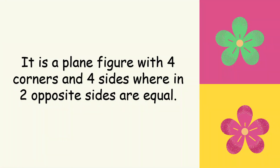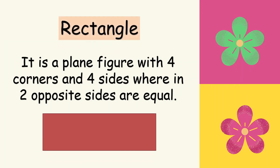Next, this is a plain figure with four corners and four sides, wherein two opposite sides are equal. Not all the sides are equal, but two opposite sides are equal. It's a rectangle.